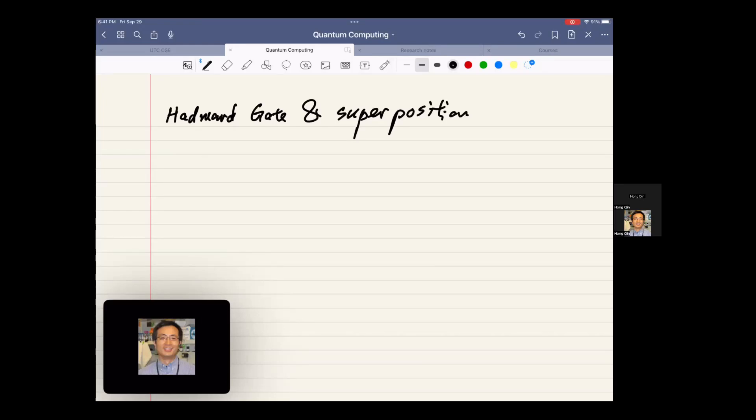Hadamard gate and superposition. Hadamard gate H is defined by 1 over square root of 2, with matrix elements 1, 1, 1, minus 1.